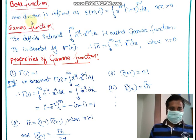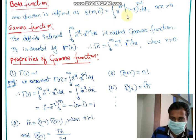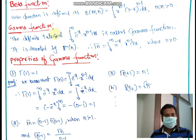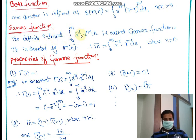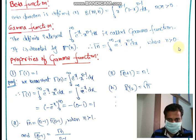Once again we will revise the definitions. The beta function is defined as β(m, n) = ∫₀¹ x^(m−1) (1−x)^(n−1) dx, where m, n > 0. The gamma function is defined as the definite integral Γ(n) = ∫₀^∞ e^(−x) · x^(n−1) dx, where n > 0.